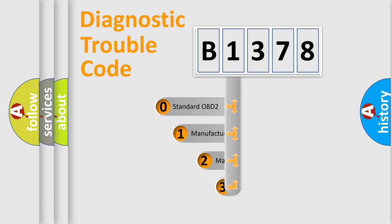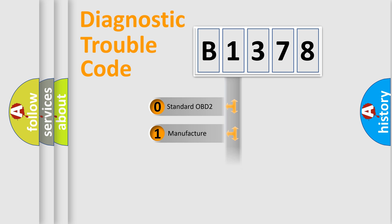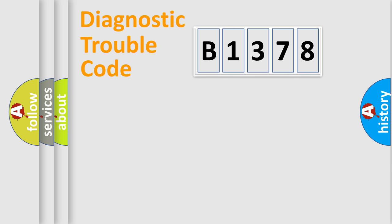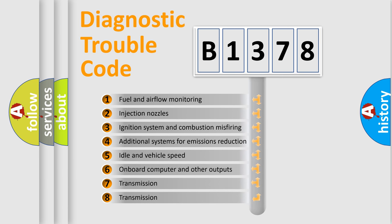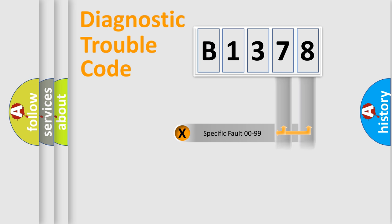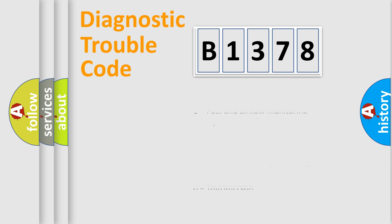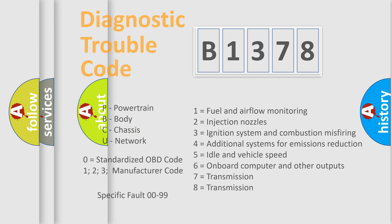This distribution is defined in the first character of the code. If the second character is expressed as zero, it is a standardized error. In the case of numbers 1, 2, or 3, it is a more specific expression of a car-specific error. The third character specifies a subset of errors. The distribution shown is valid only for the standardized DTC code. Only the last two characters define the specific fault of the group, and this division is valid only when the second character is zero.